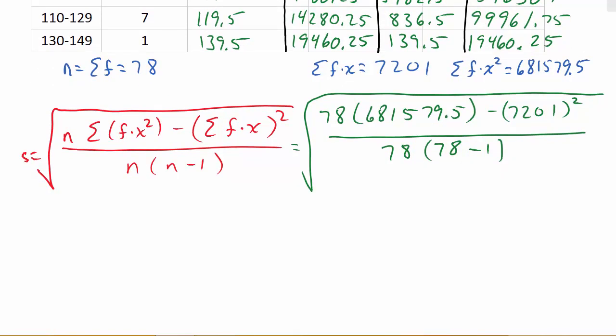And then, to punch this into our calculator, what I would do is I would just put in the numerator. So, that's going to be 78 times 681579.5, minus 7201 squared. And that gives me 1308800 over, and then 78 times 78, minus 1. That gives me 6006. And then, it would be the square root of that. So, 1308800 divided by 6006. And then, I do the square root of that. And so, my standard deviation is 14, and I'll round to two decimal places.